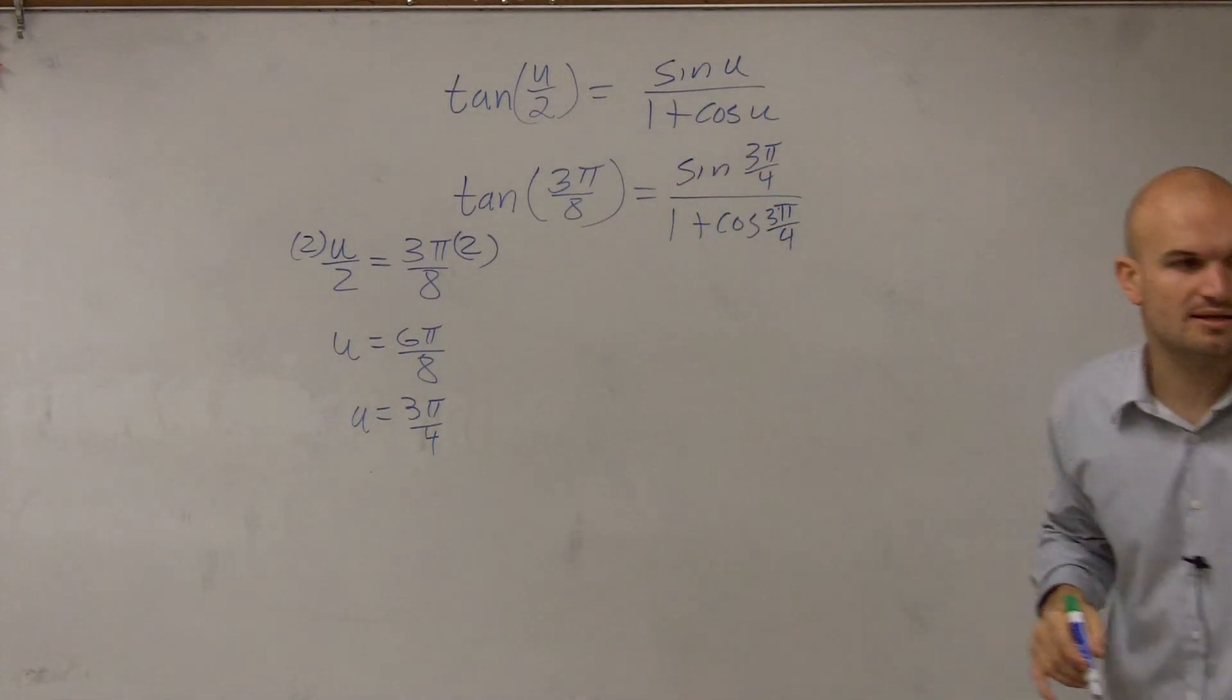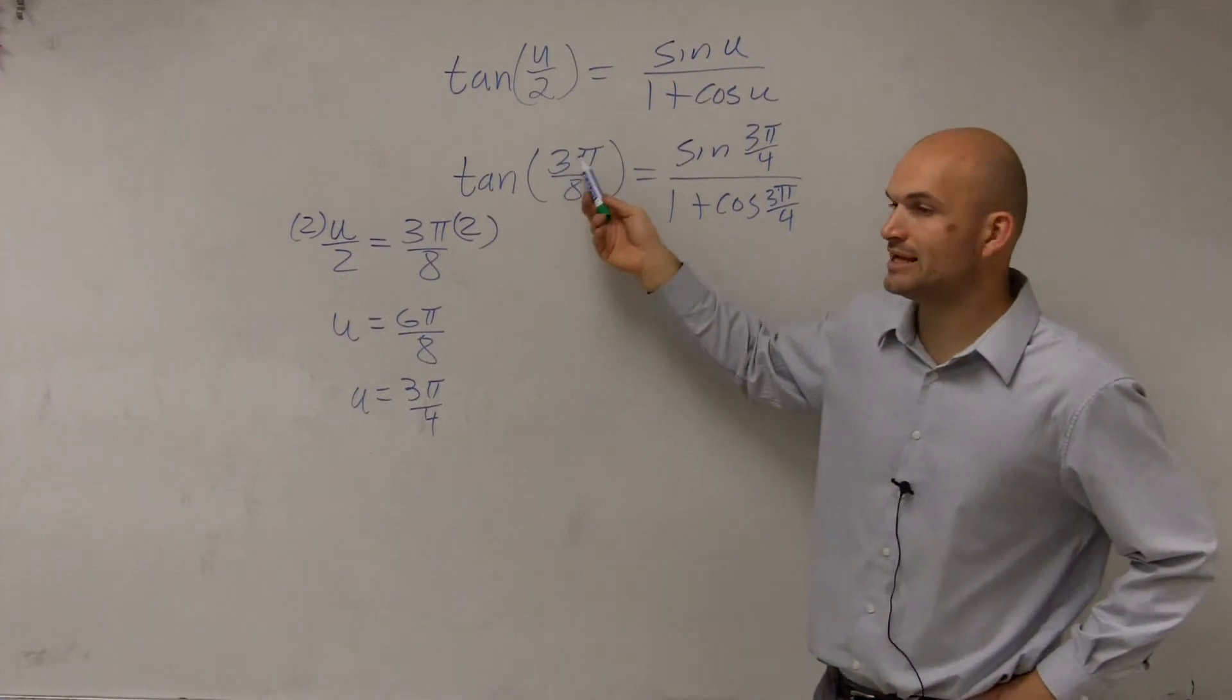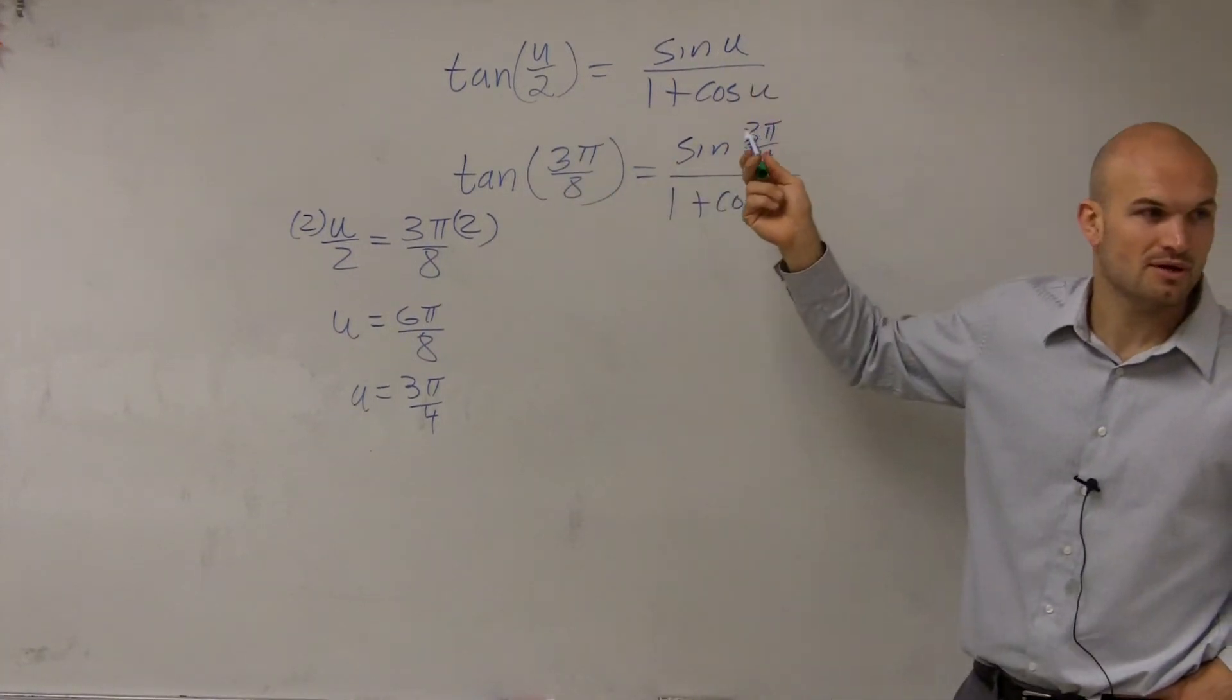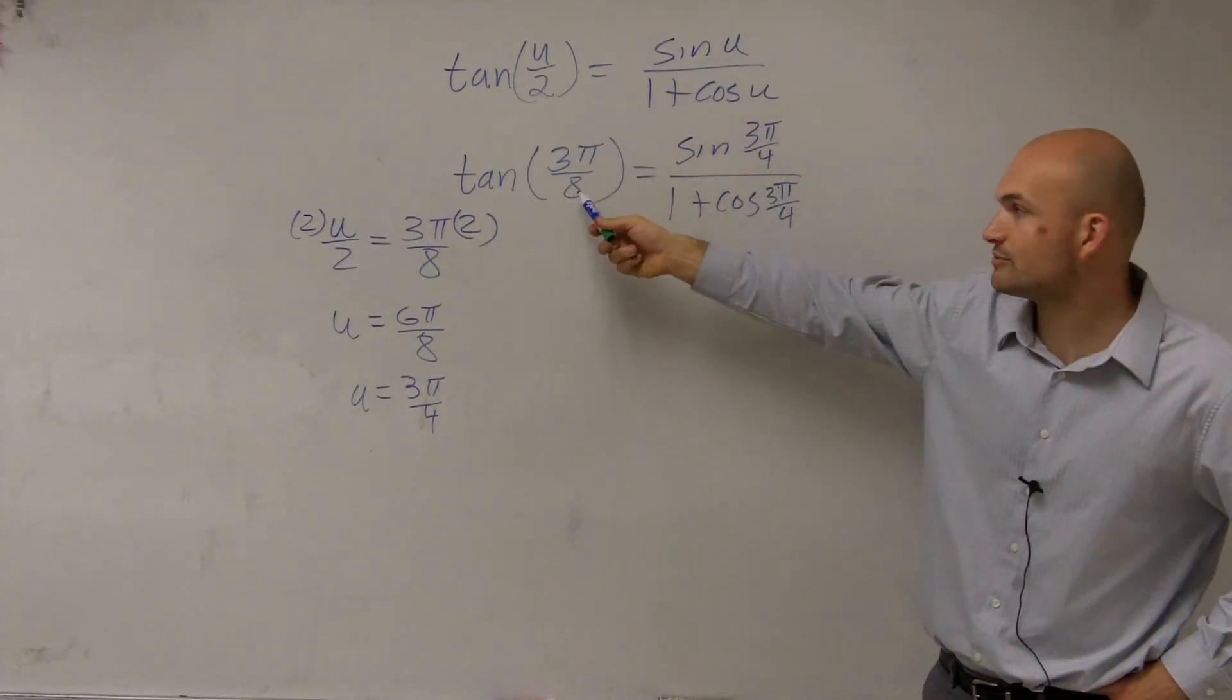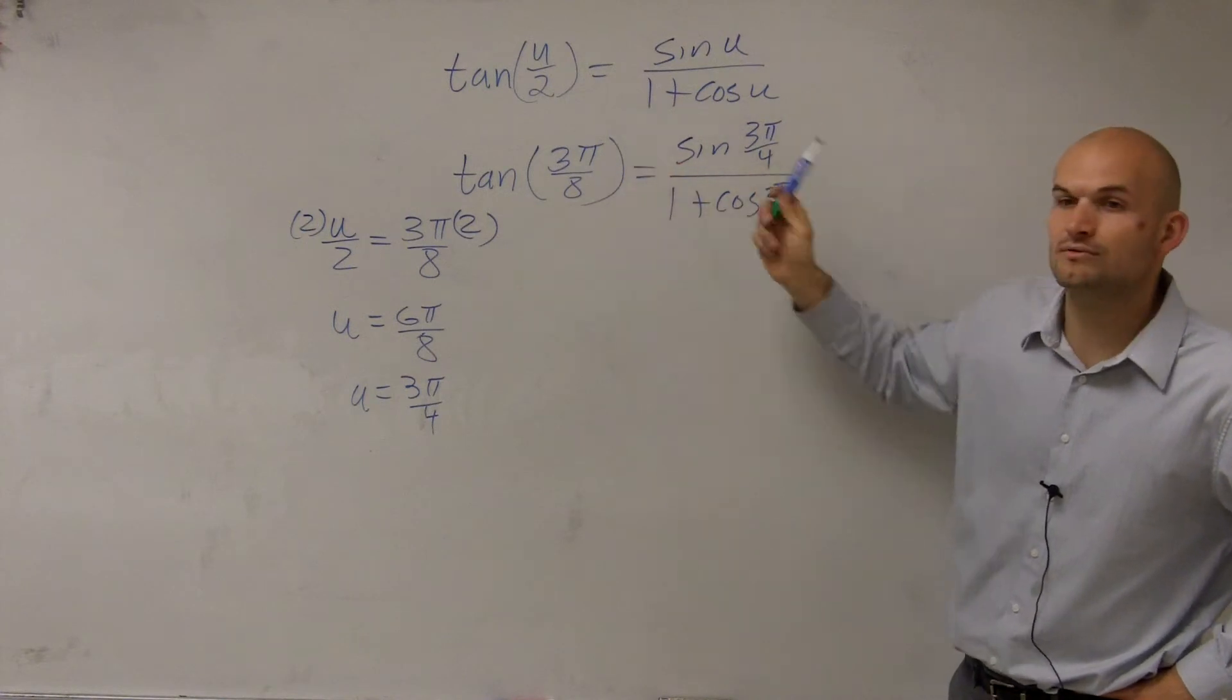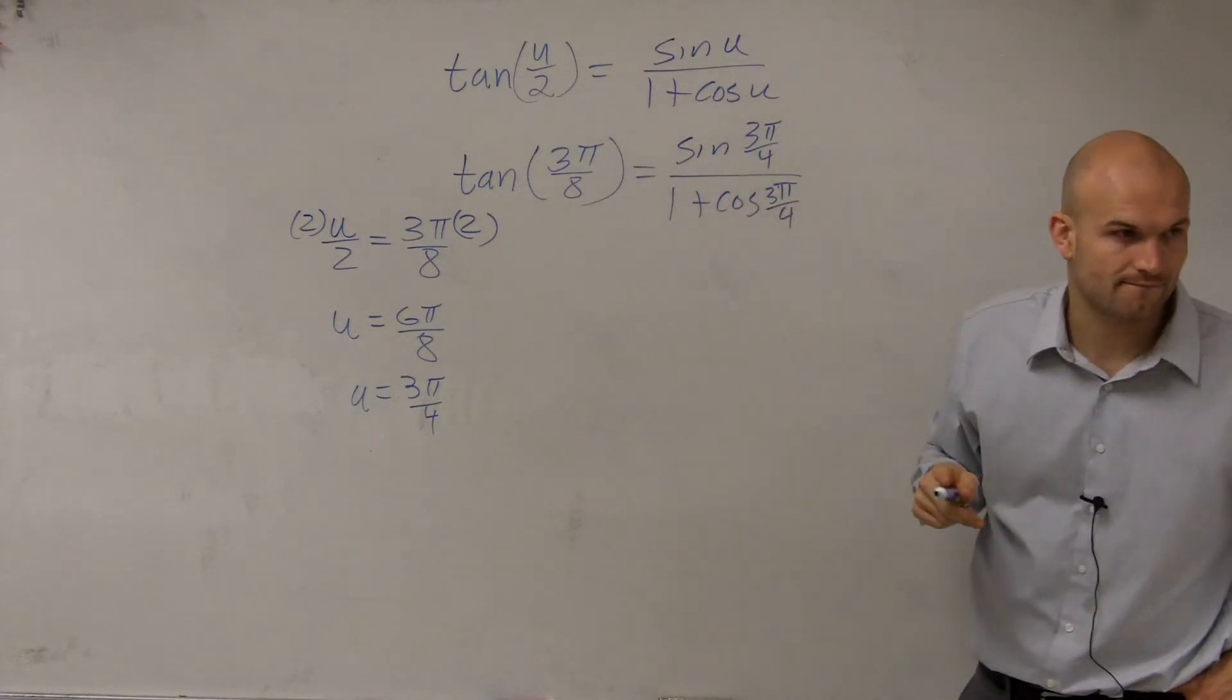The big mistake a lot of students make is they plug in 3 pi over 4 in for u. No, u divided by 2 is 3 pi over 8. You need to find what u is to plug that in.